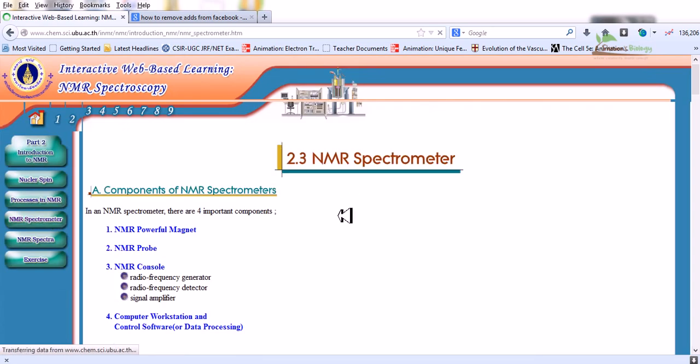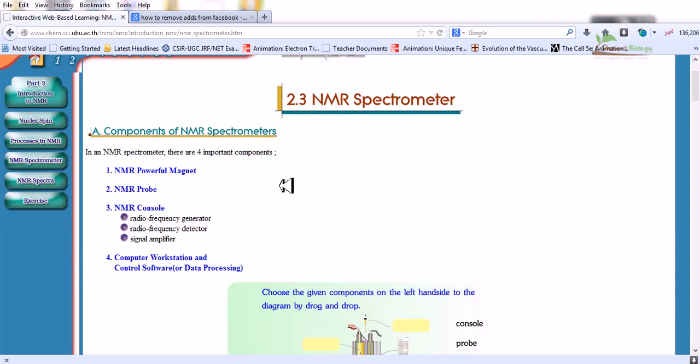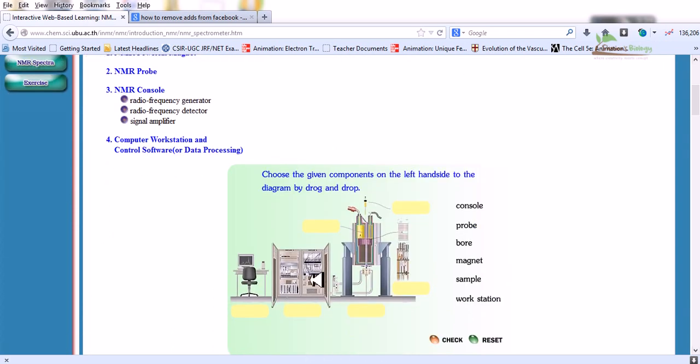Now let us talk about the basic components of an NMR spectrometer. In an NMR spectrometer there are four important components. One is the NMR powerful magnet. Second is the NMR probe. Third is the NMR console, and fourth is the computer workstation or controller software. The NMR console is made up with three different things: the radio frequency generator, the radio frequency detector, and the signal amplifier. We need the complete collaboration of all these units to finally have a fully functional NMR spectrograph.